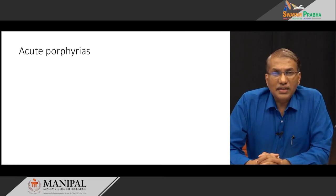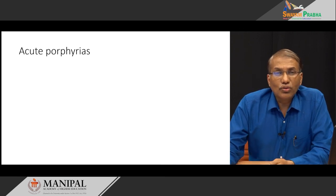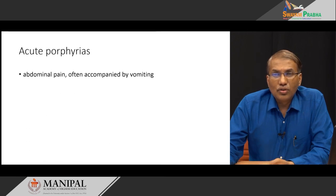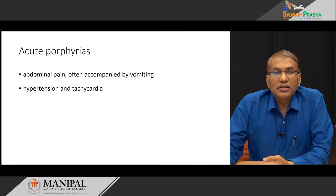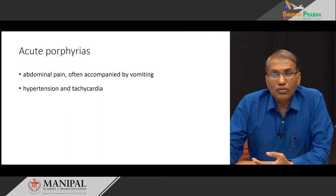Based on presentation, porphyria can be divided into acute and chronic. Acute porphyrias present with very severe and disturbing manifestations. They usually come with abdominal pain, sometimes along with vomiting, tachycardia, and increased blood pressure. The pain creates tension in the patient, which leads to increased heart rate and hypertension.